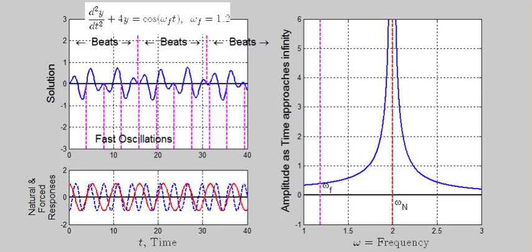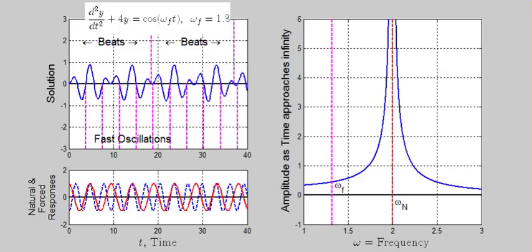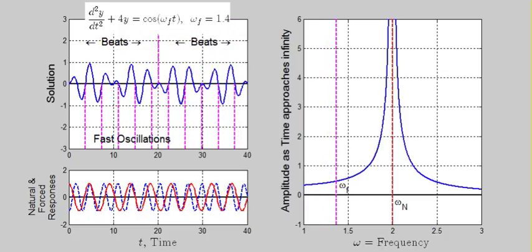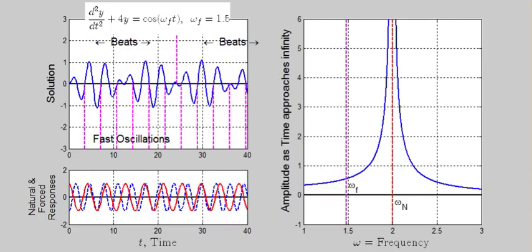What's changing here is the frequency of the forcing, omega sub f. The natural frequency, omega sub n, is fixed because it relies on the physical properties of the oscillator. The two waves interfere with each other to produce the top left graph.